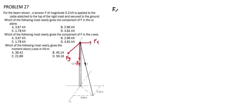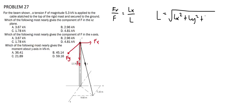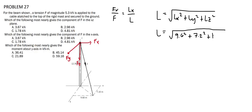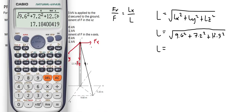Taking the ratio of the horizontal component fx to the overall net force F must be equal to the ratio of the component of the length in the x-axis to the overall length L. To solve for L, we take the square root of lx² + ly² + lz². Solving: L = √(9.6² + 7.2² + 12.3²) = 17.18 meters.